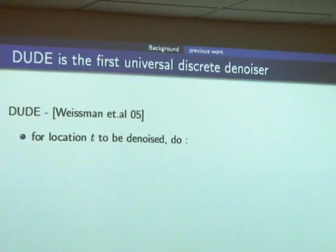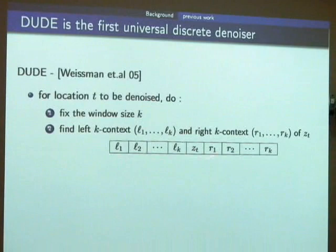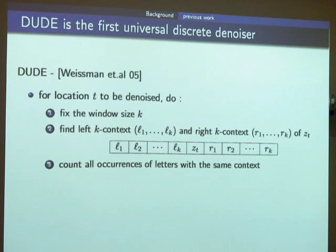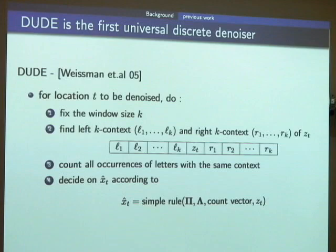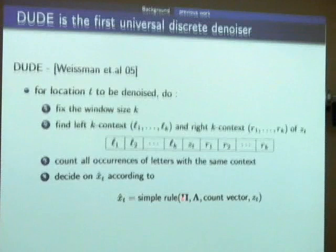DUDE is pretty intuitive. For each location t to denoise, it fixes a window size K, and at each location it looks at the left K and right K symbols — called the context of the noisy symbol z_t. It searches over the whole noisy data to find places with the same context, and counts what kind of symbols occur how many times at that middle position. Once it gets this count, it applies a simple rule depending on the channel matrix π, the loss function, the count vector, and the noisy symbol at time t.